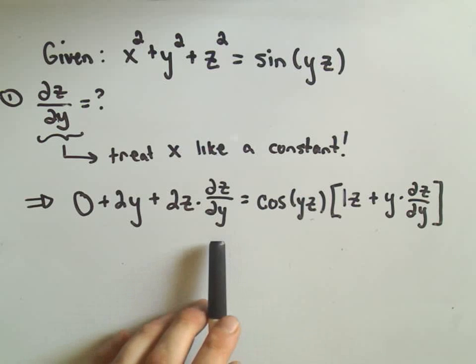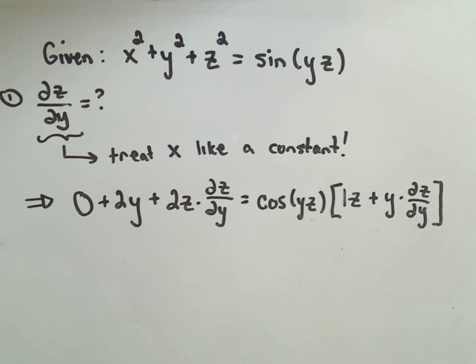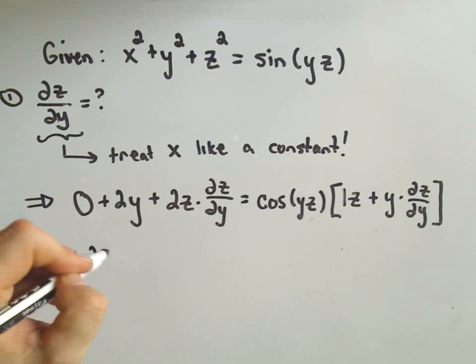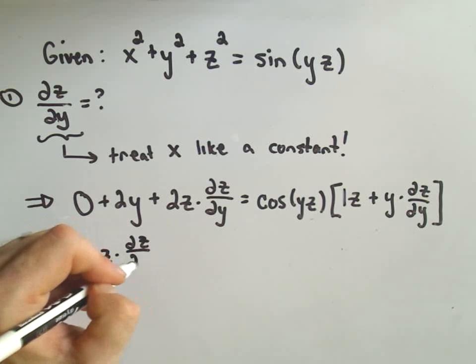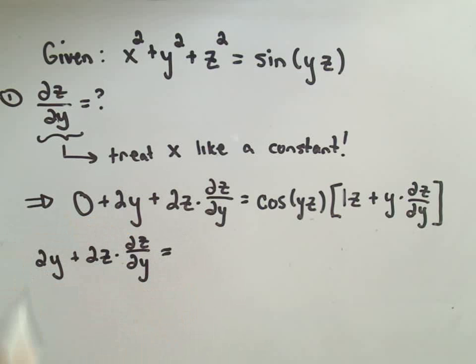So the same thing, we just simply want to solve for the partial of z with respect to y. So we can do that. We've got 2y on the left plus 2z times the partial of z with respect to y.